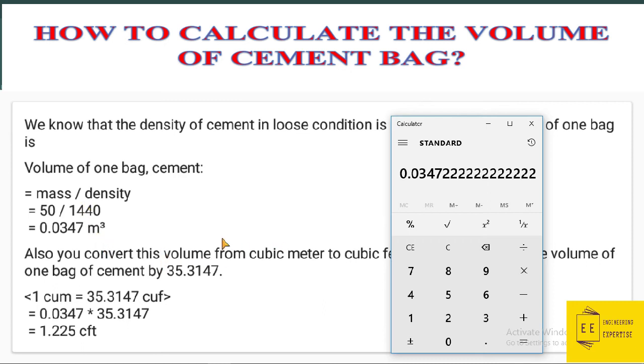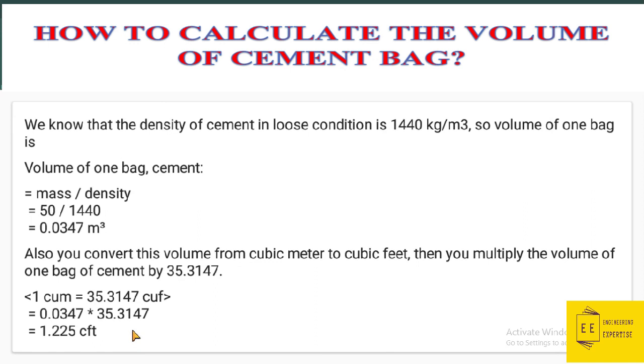To convert it into cubic feet, we know that one cubic meter is equal to 35.3147 cubic feet. So just multiply it with 35.3147 to convert it into cubic feet. It will give us 1.225 cubic feet in volume of cement bag.